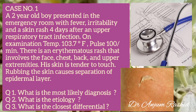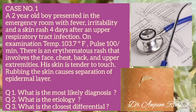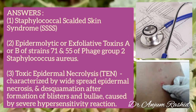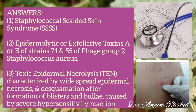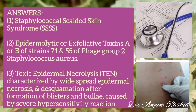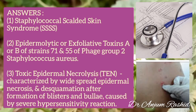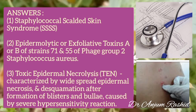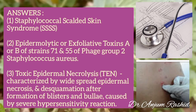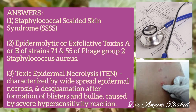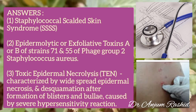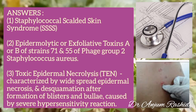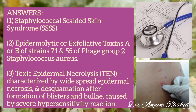Questions for you are: what is the most likely diagnosis, what is the etiology, and what is the closest differential? The diagnosis is Staphylococcal scalded skin syndrome, and it is caused by epidermolytic or exfoliative toxin A or B of strain 71/55 of phage group 2 Staphylococcus aureus. The closest differential is toxic epidermal necrolysis, which is characterized by widespread epidermal necrosis and desquamation after formation of blisters and bullae caused by severe hypersensitivity reaction.